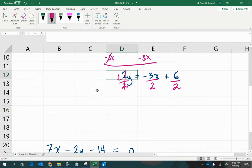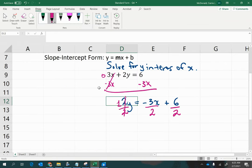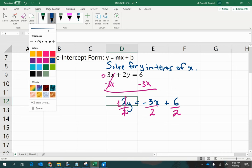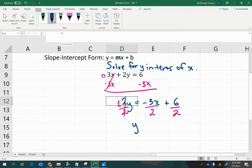And then if we simplify this, we'll have y equals mx plus b form, negative 3 halves x plus 3.